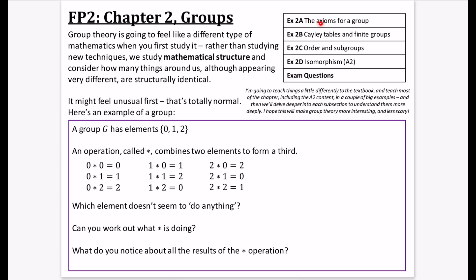I'm very briefly going to take you through what the actual structure of this topic is. We'll look at something in the first exercise called the axioms for a group. Exercise two, we do Cayley tables and finite groups, very popular in exams. We then look at order and subgroups. And then the A2 section is something called isomorphism, which we will actually touch on in the second video of this playlist.